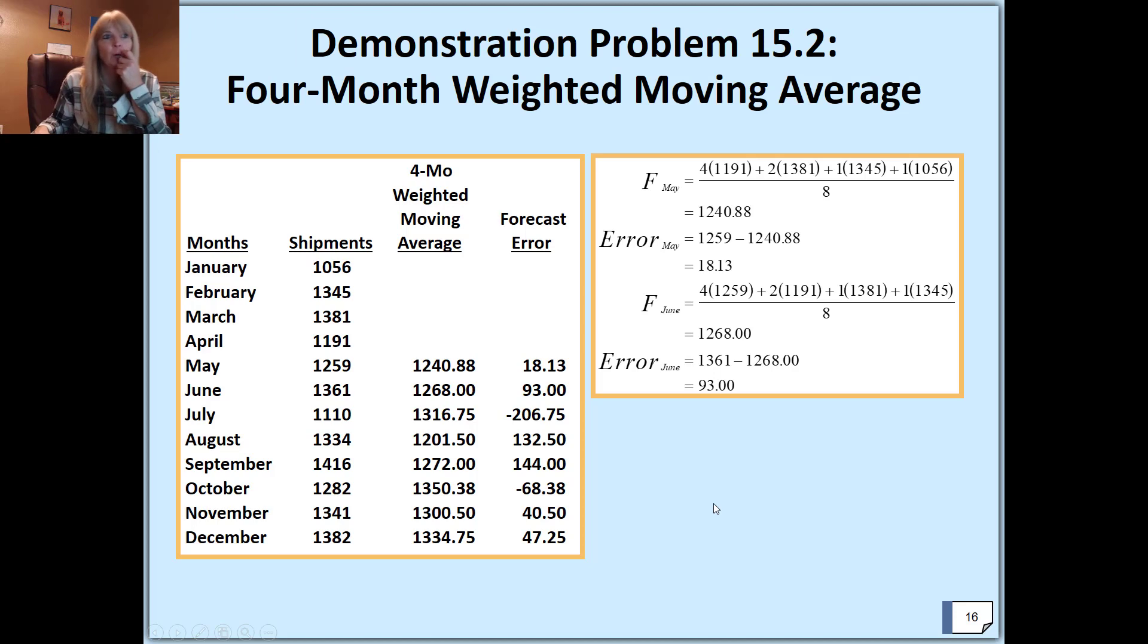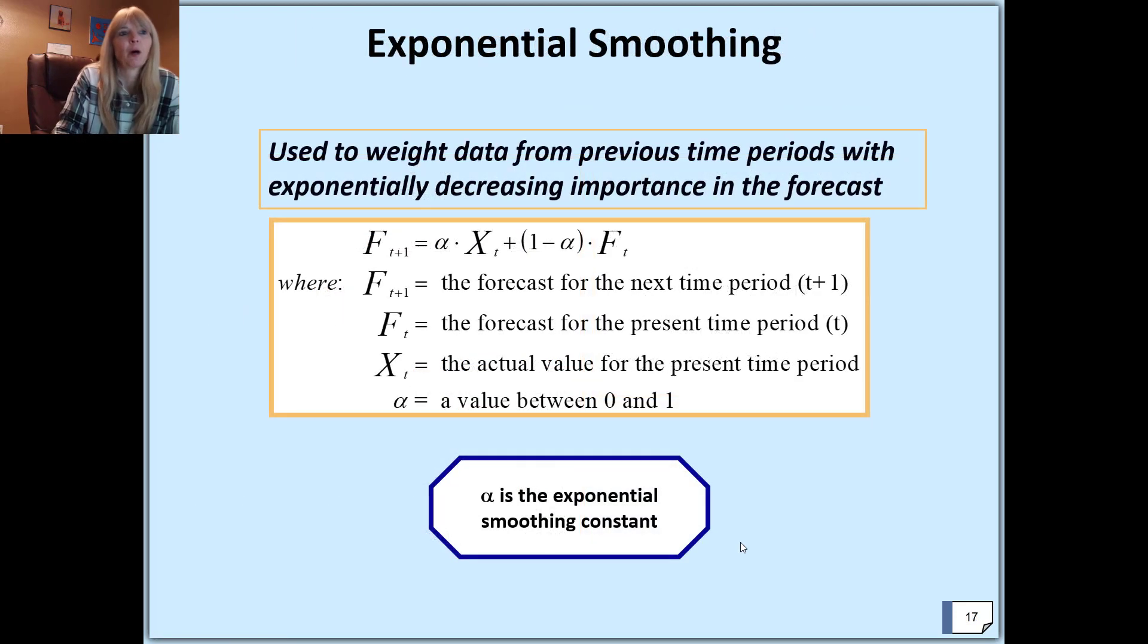Exponential smoothing: they will give you a value of alpha. This is the exponential smoothing constant—this is not alpha like the Type 1 probability error. This will be given to you. Notice here you take the alpha times the actual, and then one minus alpha times a previous forecast. That has to be given to you as well, which we do in the application, and then this gives you the next month's forecast.